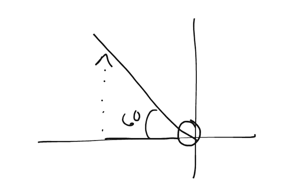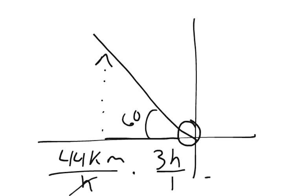We have right here Grand Bahama Island, and we know that it was going 60 degrees north of west. So we have 60 degrees here. It was going at 44 kilometers per hour for 3 hours. The hours cancel out, and it was 132 kilometers.